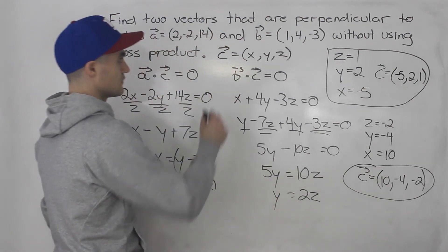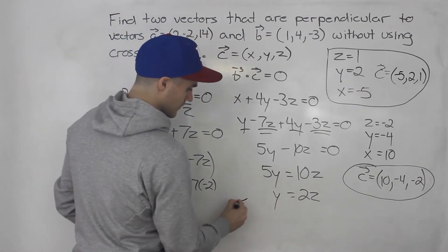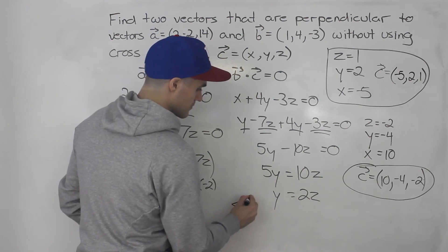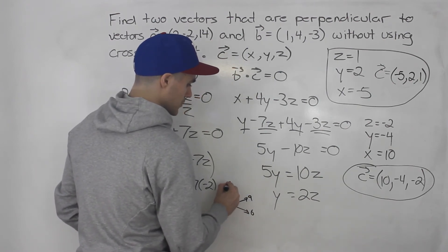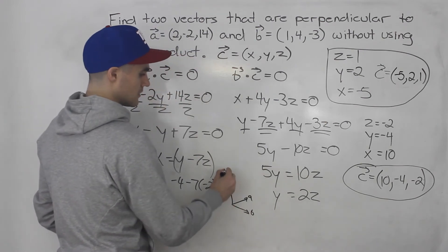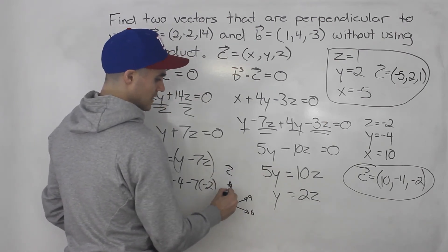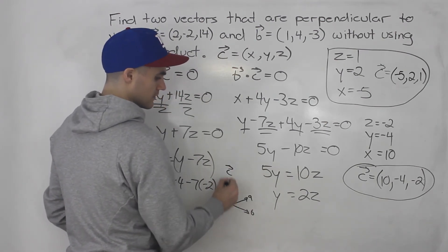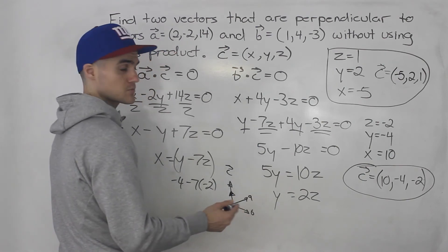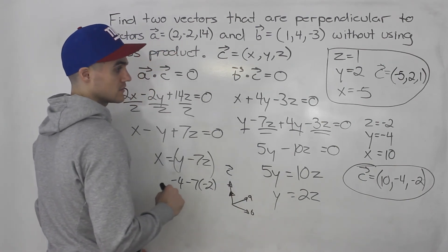Because if this vector C, we got these two vectors A and B, if this vector C is perpendicular to both of them, it's kind of sticking out, well that means any other co-linear vector is going to be perpendicular to those as well. And technically, it's a different vector.